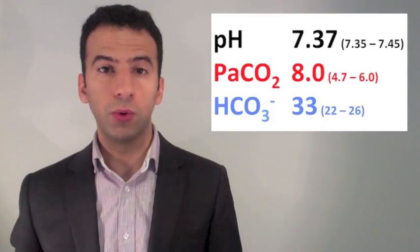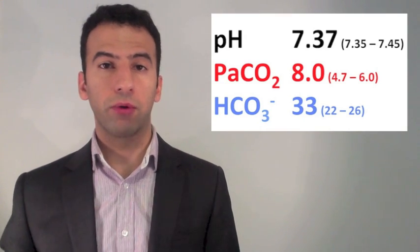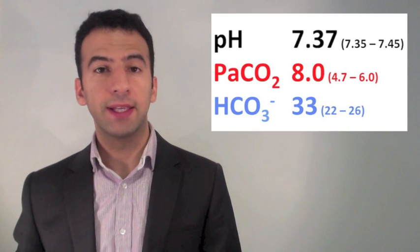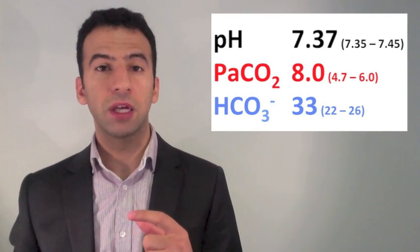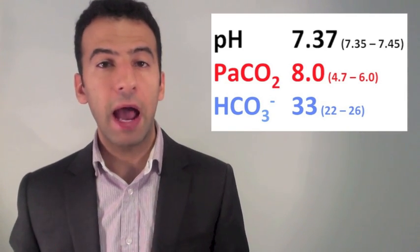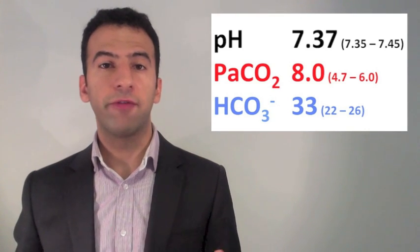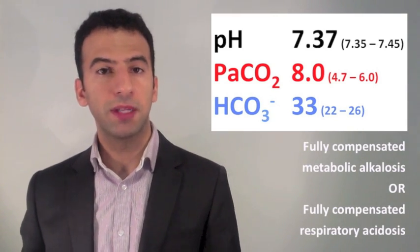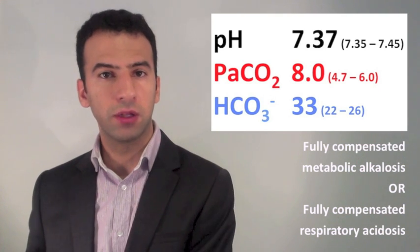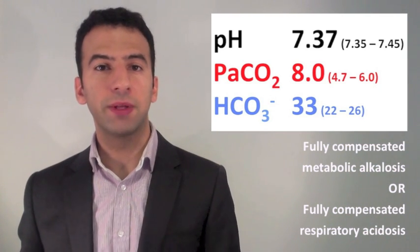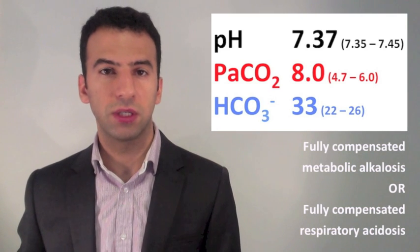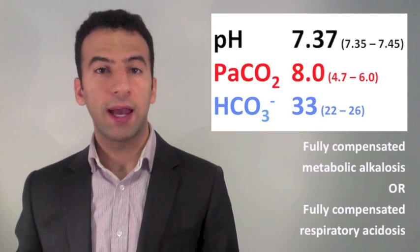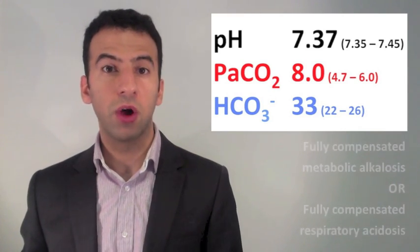Here the pH is normal, but we still need to go through Steps 2 and 3. Step 2 is not normal — the CO2 is high, acidifying. In Step 3, the bicarbonate is also high, which is alkalinising. So this could either represent a fully compensated metabolic alkalosis, since the metabolic component is moving in the alkaline direction, or a fully compensated respiratory acidosis, since the respiratory component is moving in the acid direction. That will depend on the clinical scenario.